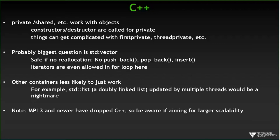Iterators are allowed even in for loops and can work very well, which allows you to stick with your elegantly written code. Other containers are less likely to work — it's a common sense kind of thing. For example, a list, which is actually a doubly linked list behind the scenes, being updated by multiple threads would be very tricky to implement — you'd want to lock things down. The theme here is things work exactly like you'd think they work if you understand what C++ is actually doing for you.